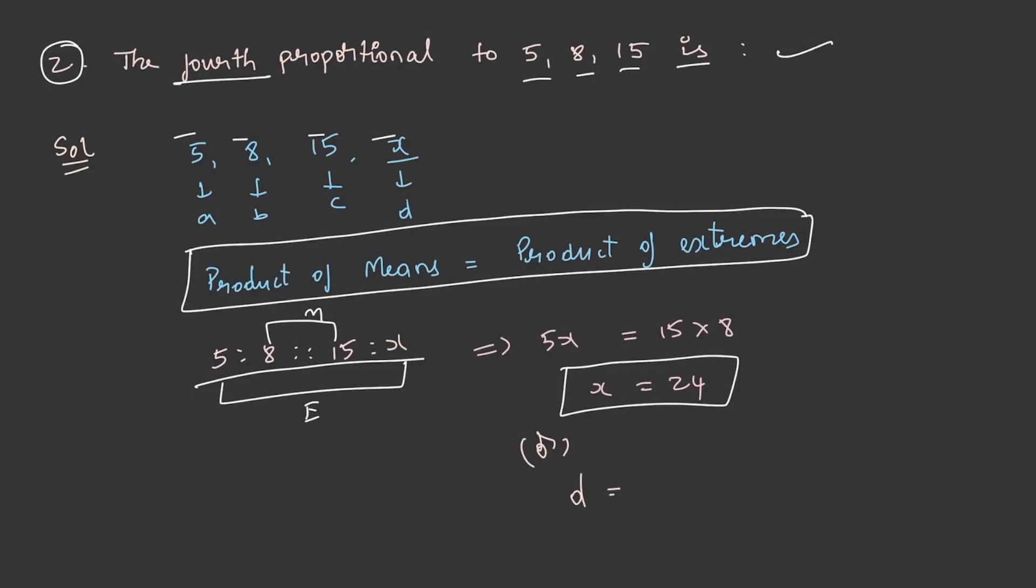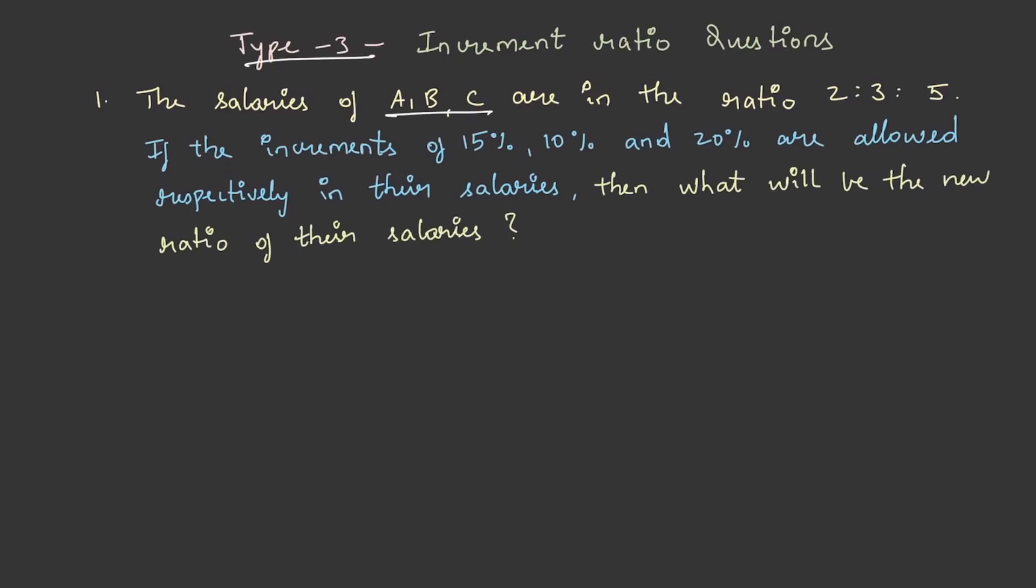Type 3. The salaries of A, B, C are in the ratio 2 is to 3 is to 5. If the increments of 15 percent, 10 percent and 20 percent are allowed respectively in their salaries, then what will be the new ratio of their salaries? Let us write the given data. Let us assume A's salary as 2x and that of B as 3x and C's salary as 5x. It is given in the question that there has been an increment of 15 percent for A and 10 percent for B and 20 percent for C.